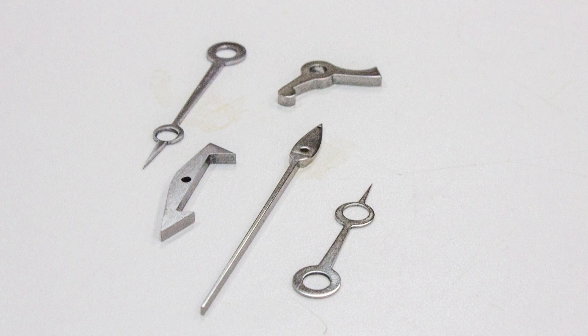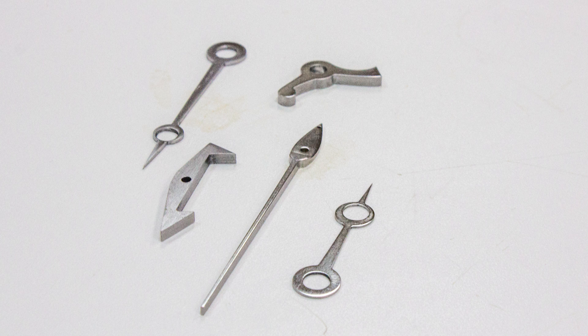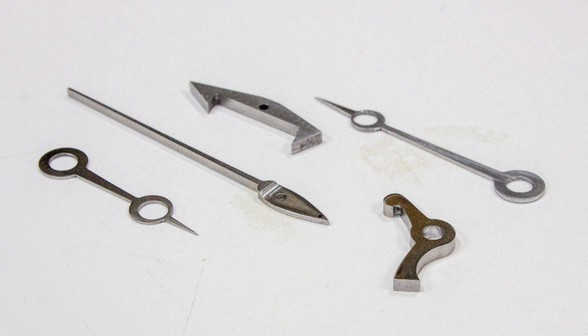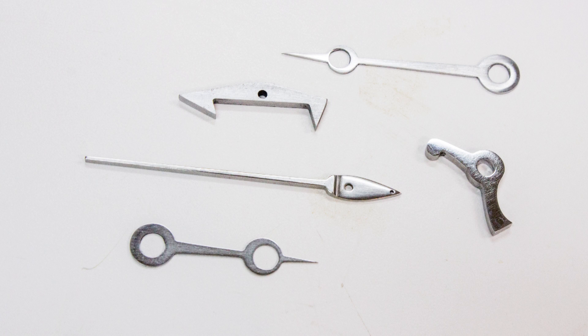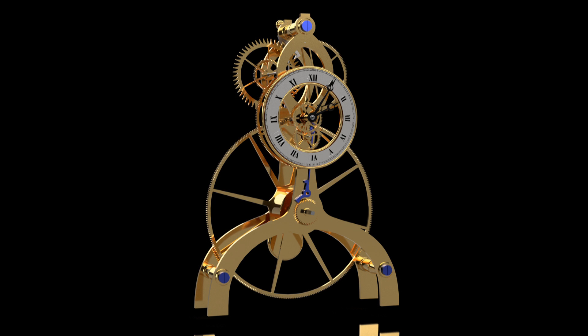So here are the steel parts that we've made in this episode. Obviously, they still need to be polished to a mirror finish, and then they have to be heat treated and blued, and I have to make screws. And the problem is, I really don't know how to do those things, and I'm not ready to tackle that yet.